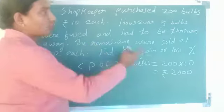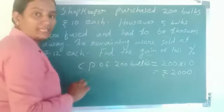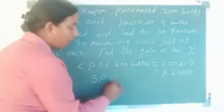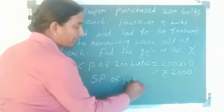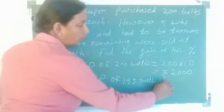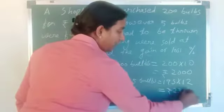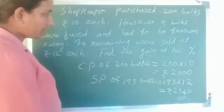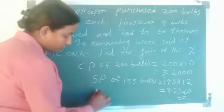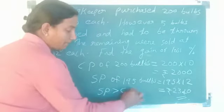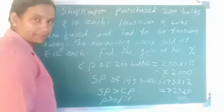Five bags were fused, so remaining bags are 200 minus 5, which is 195. The remaining were sold at rupees 12 each. So selling price SP of 195 bags equals 195 into 12, which is equal to 2340 rupees. We got CP of 2000 rupees and SP of 2340 rupees.